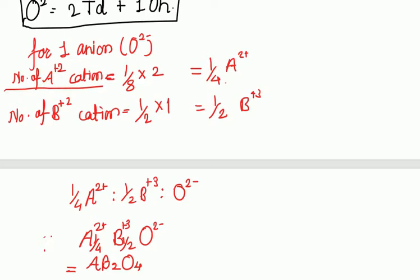AB₂O₄ is the general formula of the spinel, and from this we can confirm it is the normal spinel structure.